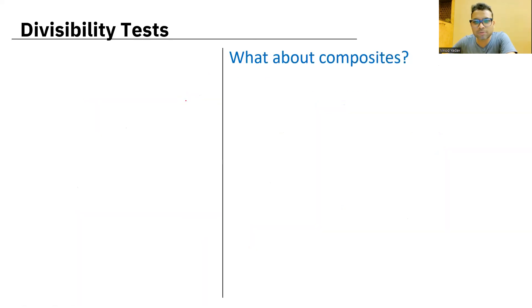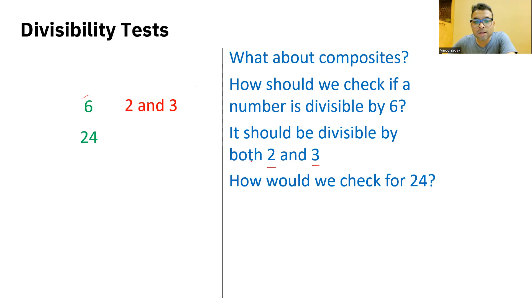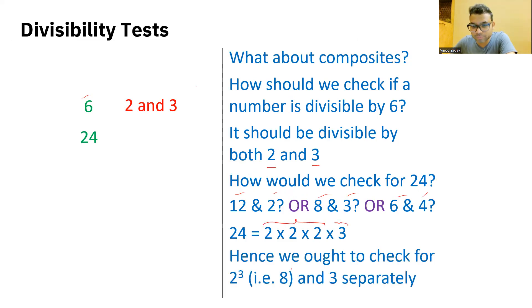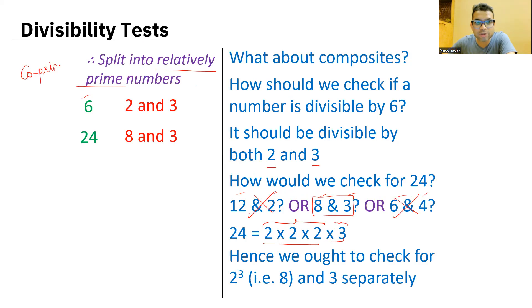What about composite numbers? For example, how should we check if a number is divisible by 6 or not? Yes, it should be divisible by both 2 and 3. In such cases, we will split the given number into two co-prime numbers. 2 and 3 are co-prime. For 24, now we have various possibilities. Should I check for 12 and 2, or 8 and 3, or 6 and 4? Now see, to create a 24, I need exactly three 2s and a 3, right? Separately divisible by 8 and 3. So this will be finally selected, not this and not this. So ultimately, what is the conclusion? Split into relatively prime numbers or co-prime numbers. Remember we had done this in the last video.